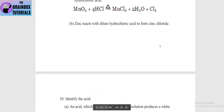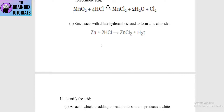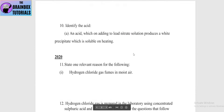Next: write the balanced chemical equation for zinc reacting with dilute hydrochloric acid to form zinc chloride. The reaction is: Zn + 2HCl → ZnCl2 + H2 gas.